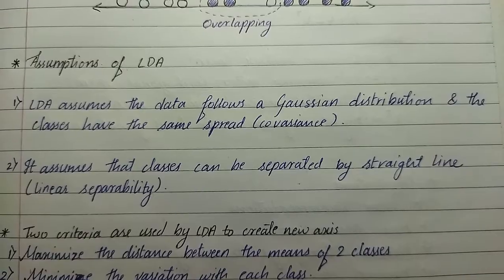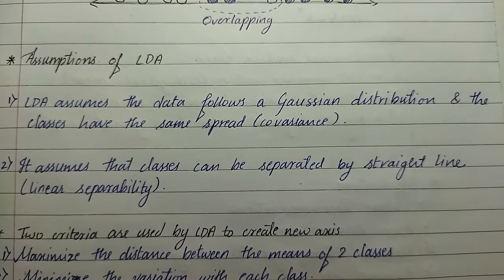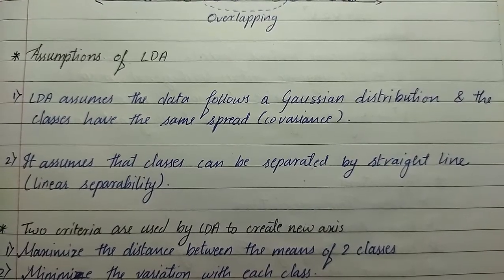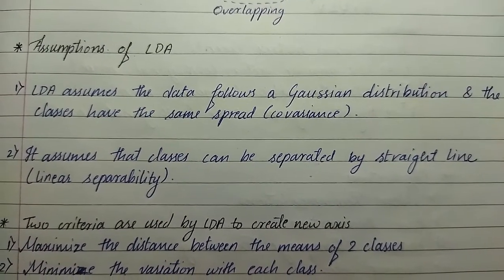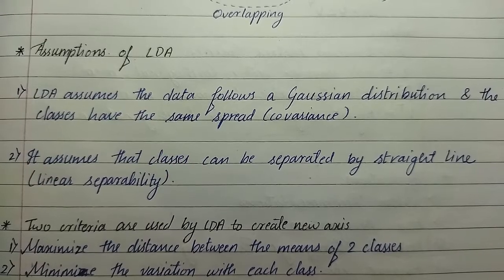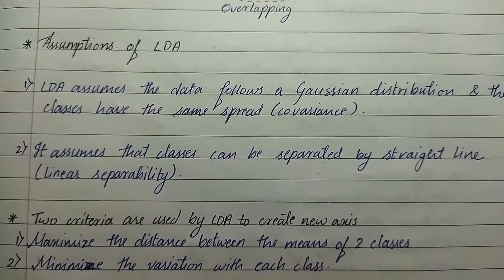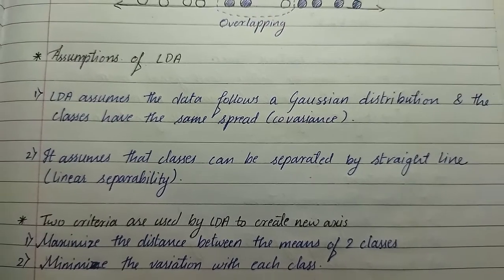Now we'll see the assumptions of LDA. First, LDA assumes that the data follows a Gaussian distribution and the classes have the same spread (covariance). Second, it assumes that the classes can be separated by straight lines (linear separability).